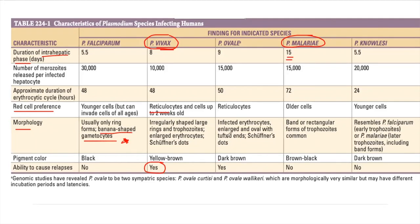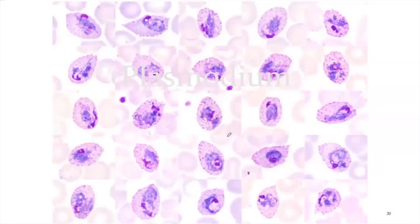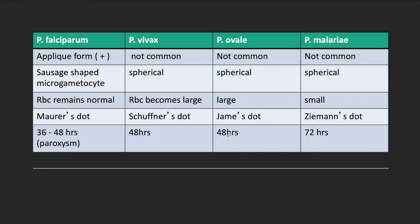Mnemonics for the dots: FM (Ferdinand Marcos/Magellan) = falciparum, Maurer's dots. VS (Vilma Santos) = vivax, Schüffner's dots. OJ (OJ Simpson/Orange Juice) = ovale, James dots. MZ (Manila Zoo) = malariae, Ziemann's dots. Memorize these — they are a sure point on your exam.